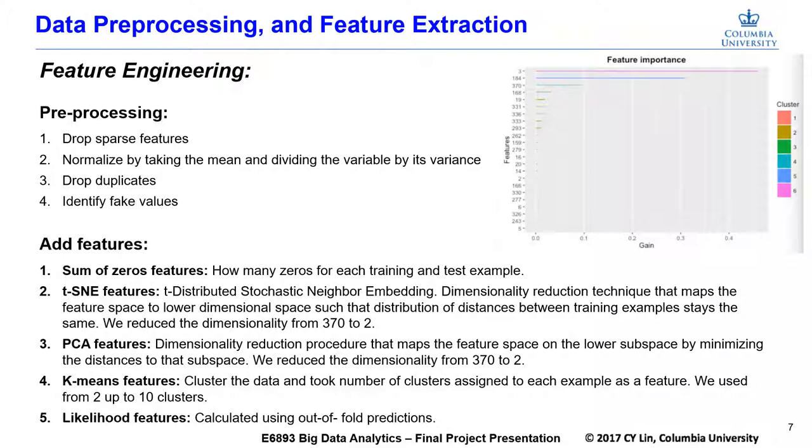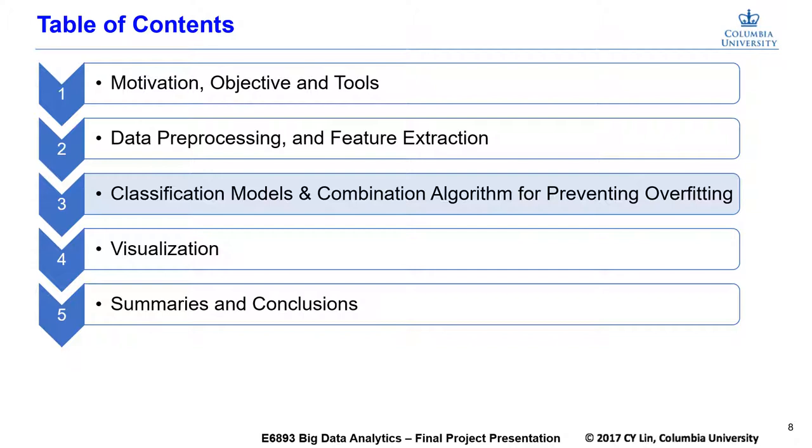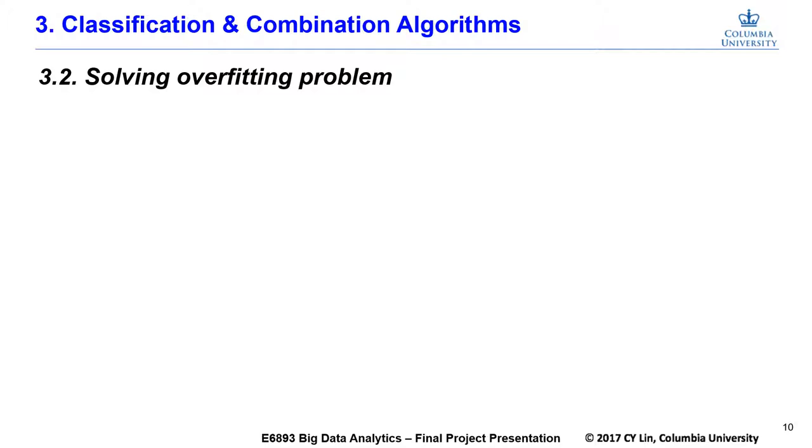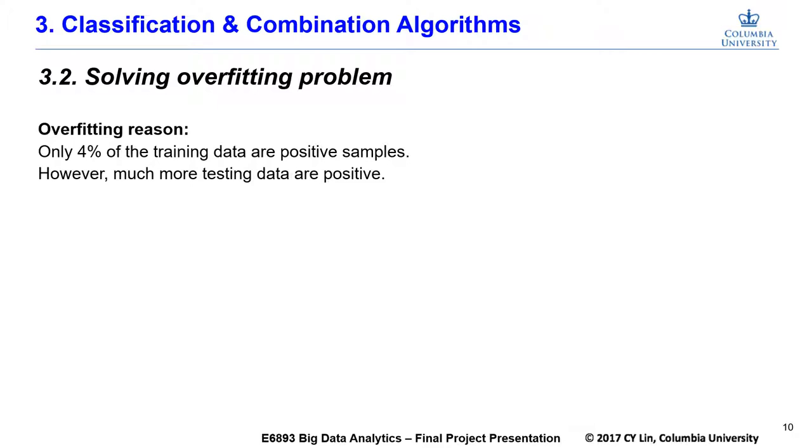In the third section, I will talk about classification and how to prevent overfitting. In the previous stage, different classifiers were compared. Random forest performed the best. However, the results were not satisfying. The mediocre performance was due to overfitting, because only 4% of the training data are positive. However, much more testing data are positive.